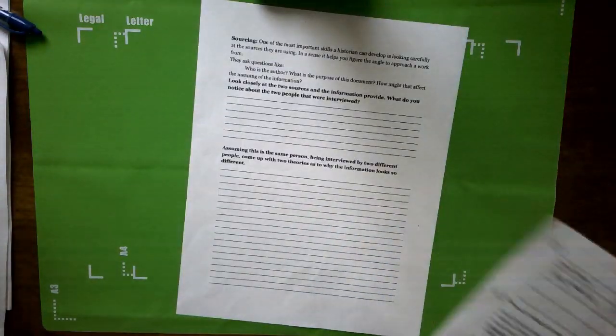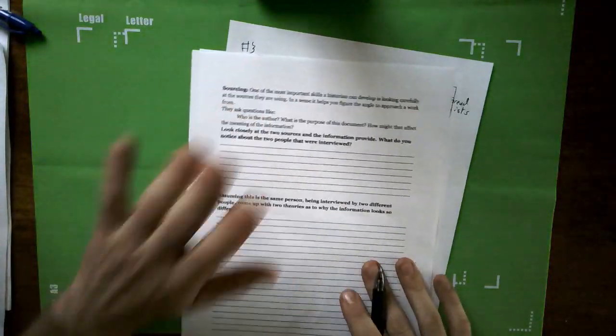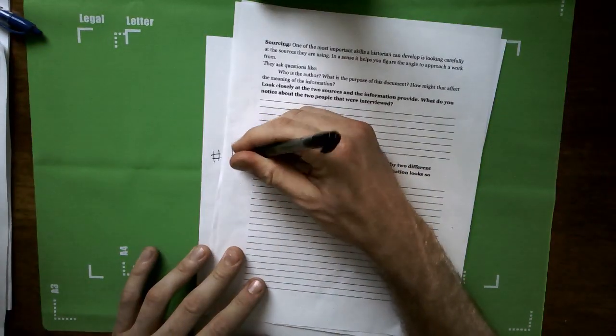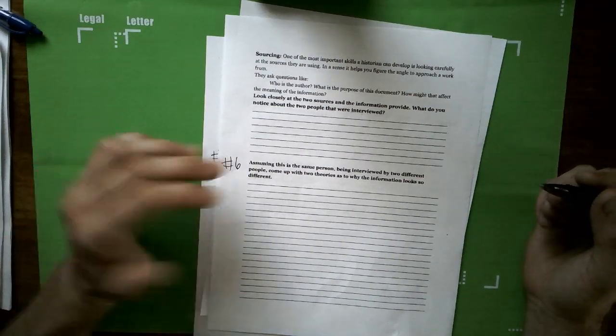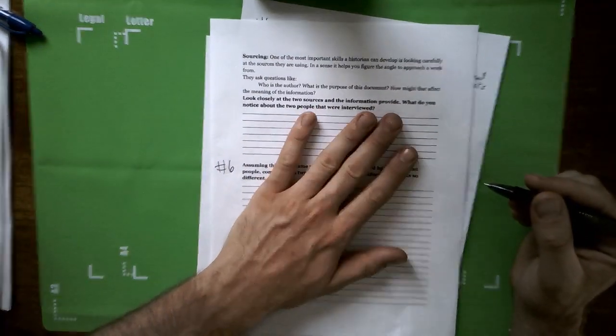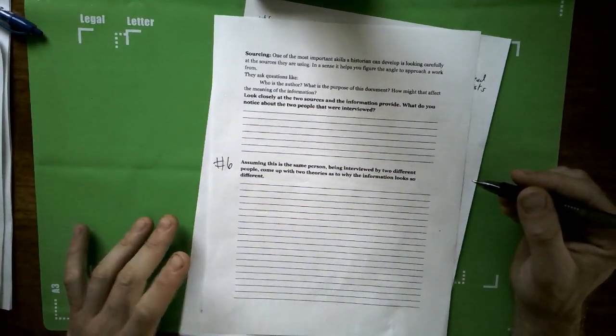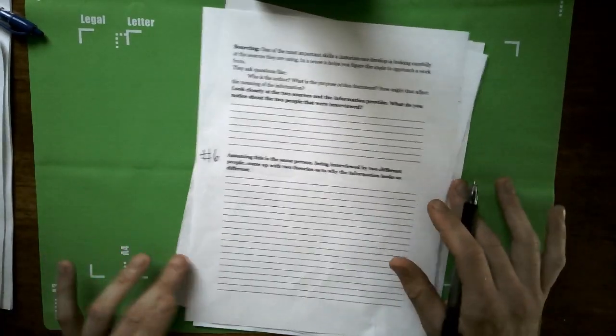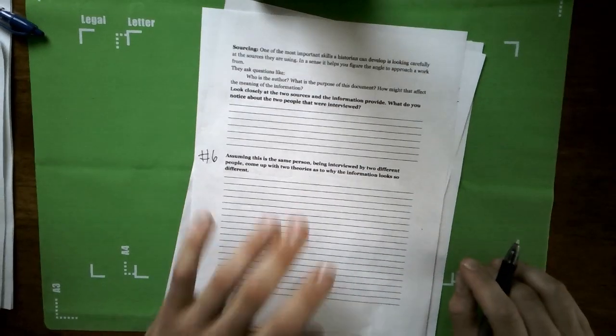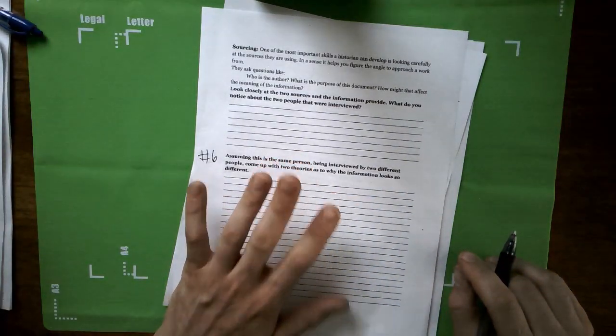The very last thing you're going to need to do, after answering this question here in assignment number six, is write an argument about why the two sources, even though they appear to be from the same person, have different information in them. So I'm kind of giving it away a little bit, but I also want you to understand what you're doing. And this is effectively a single paragraph short essay.